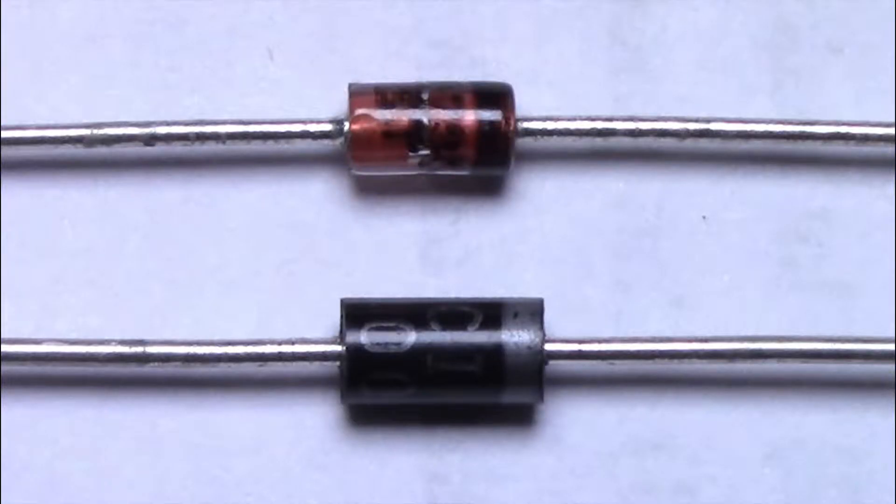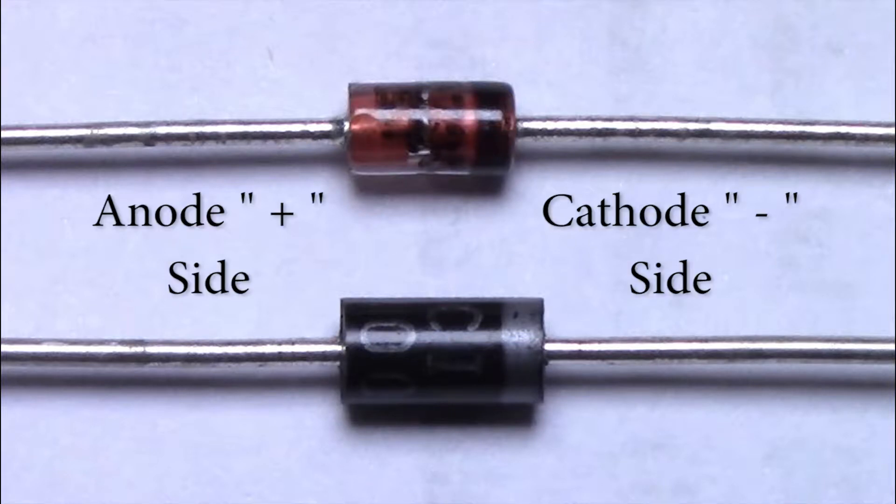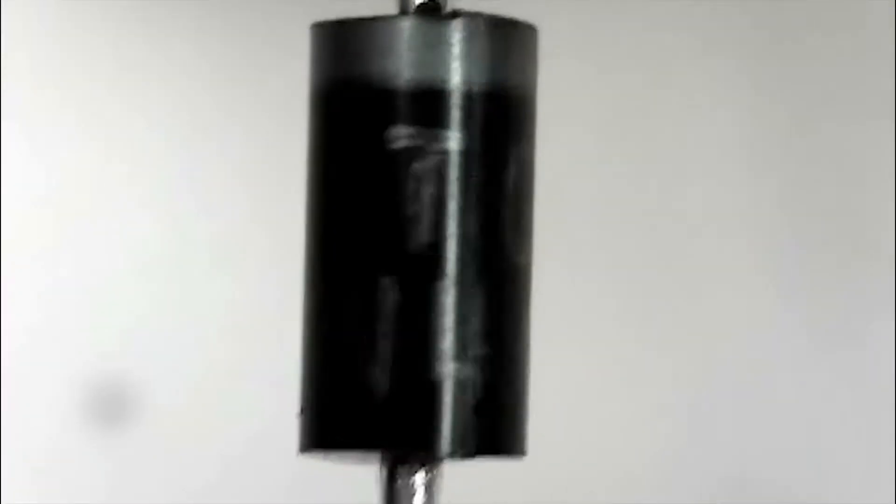There are two different diodes in this kit. Both have a ring around the end that indicates the cathode or the negative side. Use a magnifying glass to read the part number on the case to identify them.